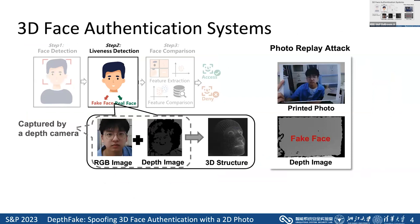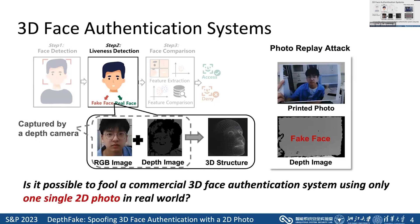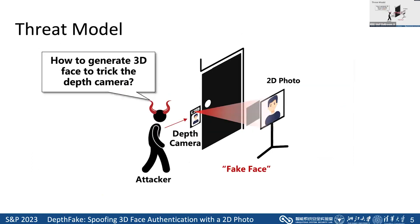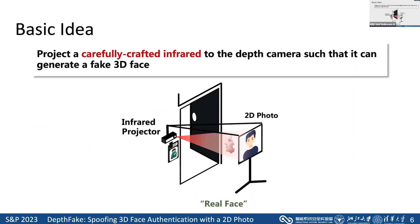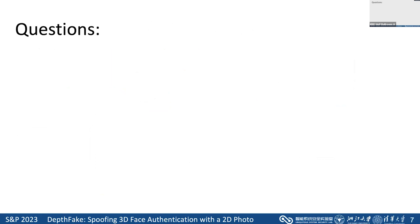In this paper, we ask the question: is it possible to fool a commercial 3D face authentication system using only one single 2D photo in the real world? When an attacker wants to bypass a 3D face authentication but only has a 2D photo, he needs to generate a 3D face to trick the depth camera. Our basic idea is projecting carefully crafted infrared to the depth camera such that it can generate a fake 3D face.